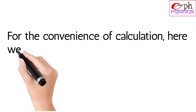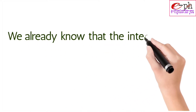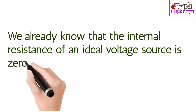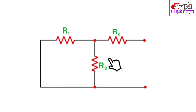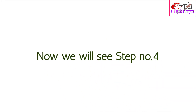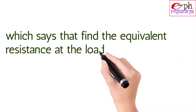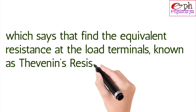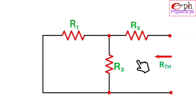Step 3 says that if the sources are ideal, short-circuit the voltage source and open-circuit the current source. For convenience, we assume this voltage source is ideal. We already know that the internal resistance of an ideal voltage source is zero, so we short-circuit it. After shortening the circuit, the circuit looks like this. Step 4 says to find the equivalent resistance at the load terminal, known as Thevenin's resistance. We will calculate the value of equivalent resistance Rth between the two terminals.